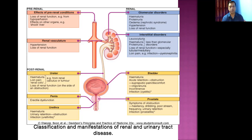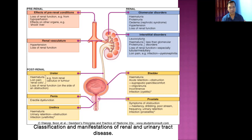In some bladder disorders, especially neurological conditions, there may be incontinence — inability to control urine flow, resulting in involuntary passage of urine.